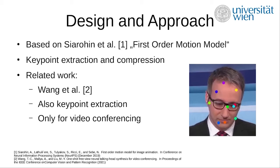The receiver can then reconstruct the video by using one source image, which is the first frame of the original video. We also found a similar approach from Wang et al., who proposed the same method of extracting image information using key point extraction and one source image. The difference lies in the use case: Wang et al. proposed this in a video conferencing setting, while our project based on Siarohin et al. could also be used to train on other motion models.